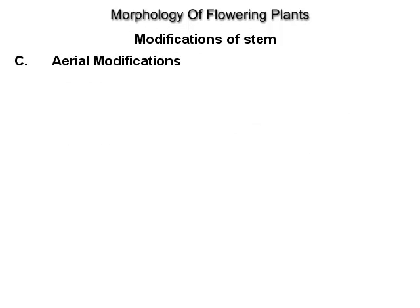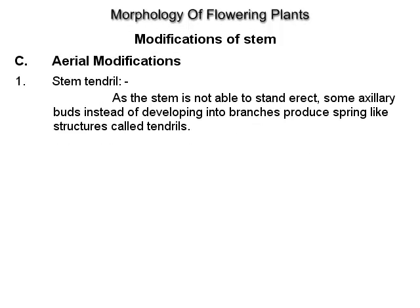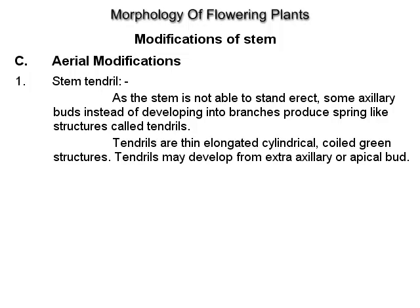Aerial modifications. Stem tendril: as the stem is not able to stand erect, some axillary buds instead of developing into branches produce spring-like structures called tendrils. Tendrils are thin, elongated, cylindrical, coiled, green structures. Tendrils may develop from extra-axillary or apical buds, example Cucurbita and Passiflora.